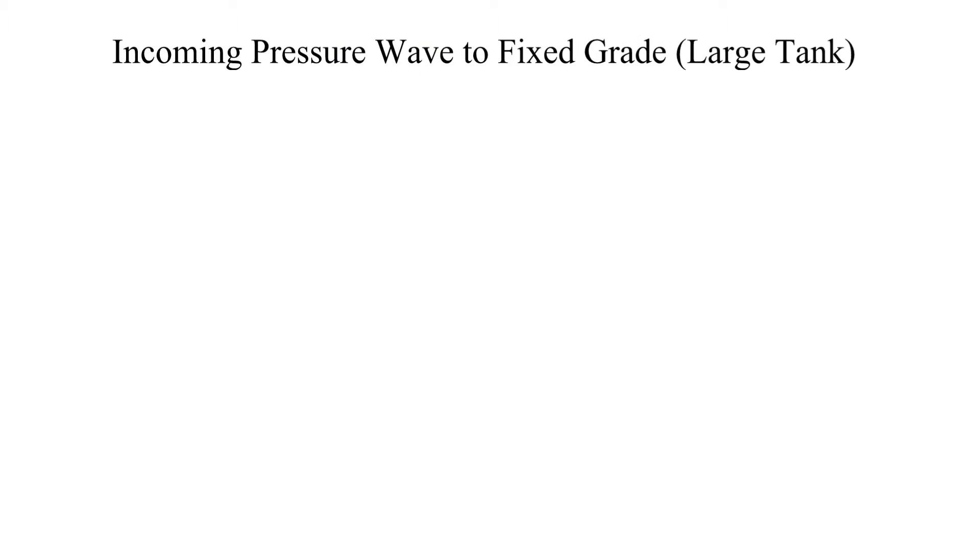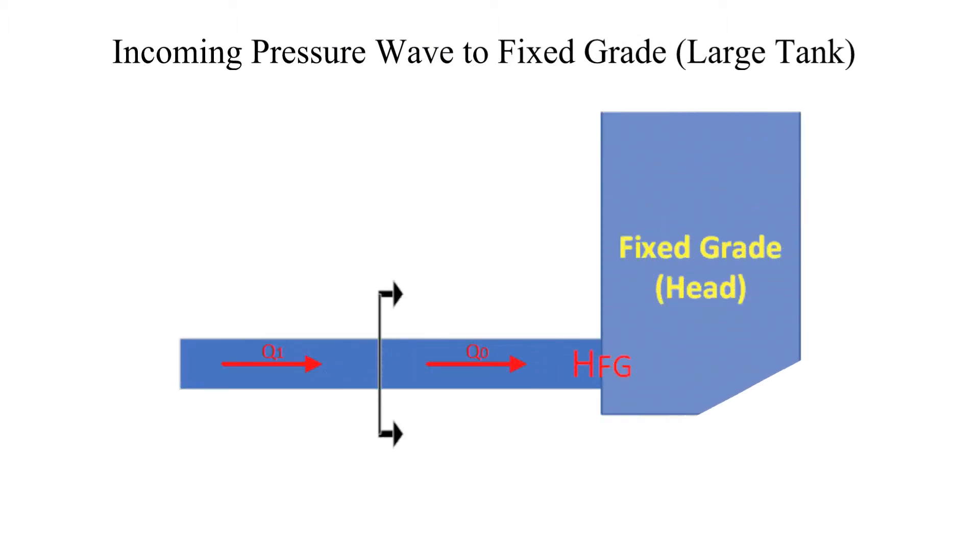Let's start with how a wave reflects off a large tank. Shown is an incoming wave denoted as delta H1 prior to it impacting the large tank. Note that the head after the wave is the original head plus the magnitude of delta H1. The flow after the wave is denoted by Q1, H0 and Q0 are the head and flow in front of the wave.